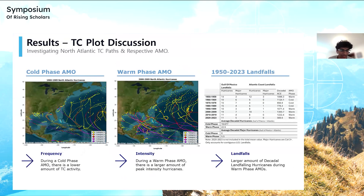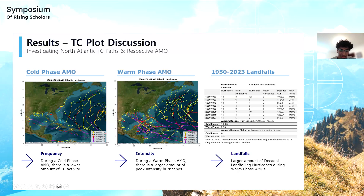Getting into the results — when looking at the AMO, I examined cold phase and warm phase AMOs, where cold phase has below average and warm phase has above average anomalies. As you can see in the left plot, during a cold phase AMO there's usually a lower amount of tropical cyclone activity with fewer tracks overall. But in the warm phase AMO, you can definitely see more tracks at higher intensity, including Category 4 and 5 hurricanes. Taking all decades from 1950 to 2023, the cold phase had a lower amount of decadal hurricanes compared to the warm phase. Interestingly, for major hurricanes — Category 3 or higher — cold phases actually had a higher number of landfalling hurricanes.